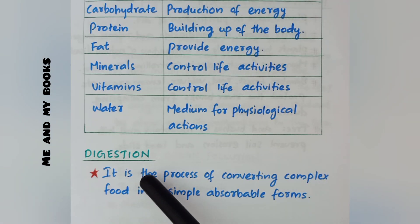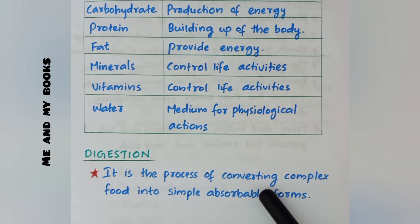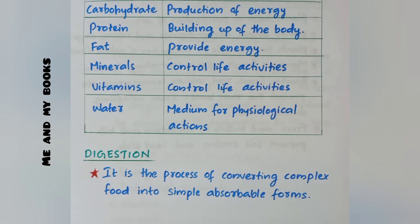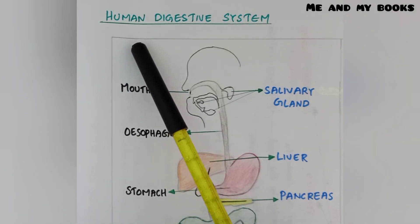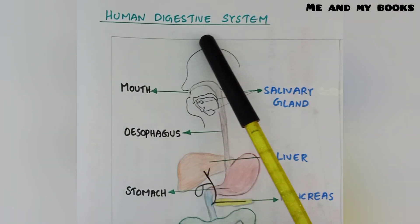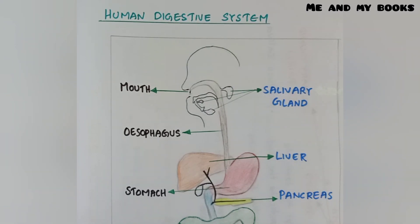What is digestion? It is the process of converting complex food into simple absorbable form. Complex food is broken down into simple forms with the help of the digestion process.